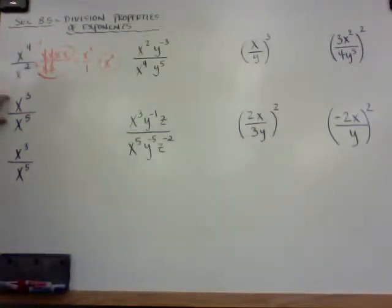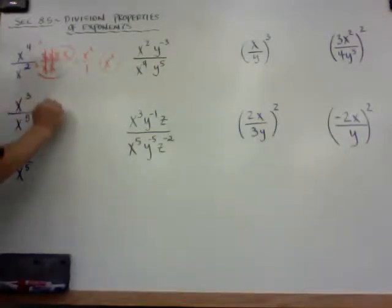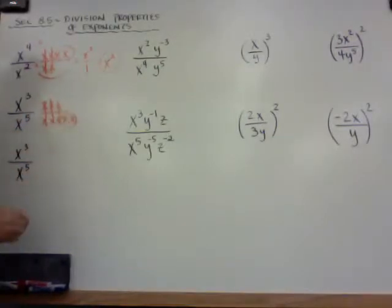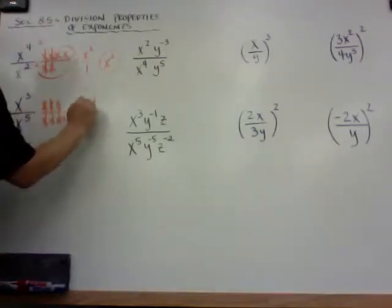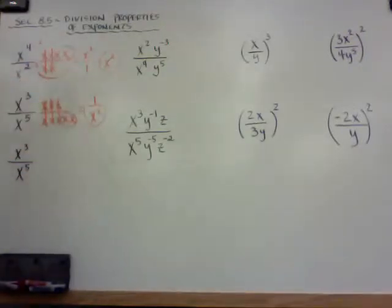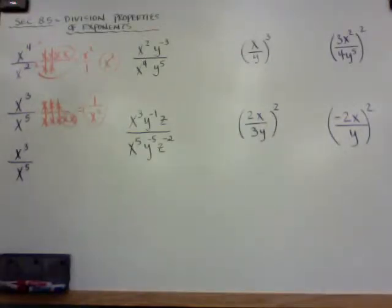In this example, I have more on the bottom. If I wrote it out the long way, I would get 3 on the top, 5 on the bottom. When I cancel these out, I'm left with 2 x's on the bottom. So my answer would be 1 over x squared instead of x squared over 1. I have 2 more on the bottom because I have 3 on the top, 5 on the bottom. If I took 3 away each, that's what happens.